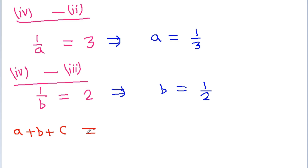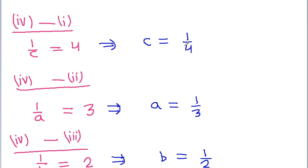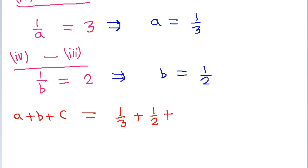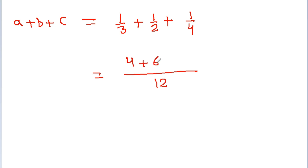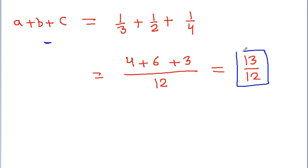Now we have to find the value of a plus b plus c, so a is 1 by 3 plus b is 1 by 2 plus c is 1 by 4. The common denominator is 12, and 4 plus 6 plus 3 is 13, so a plus b plus c is equal to 13 by 12.